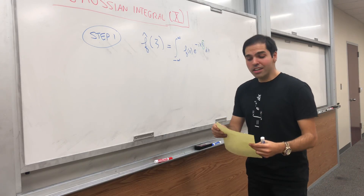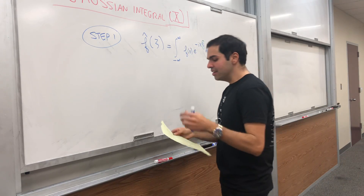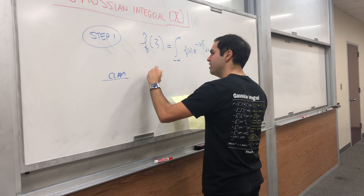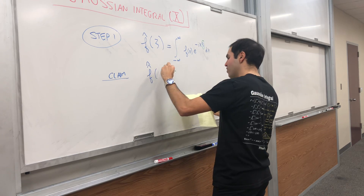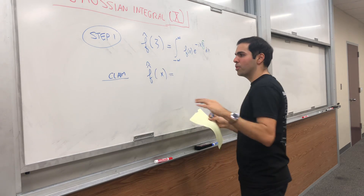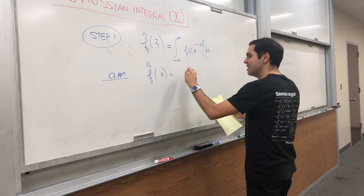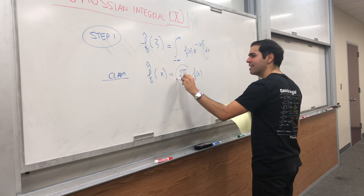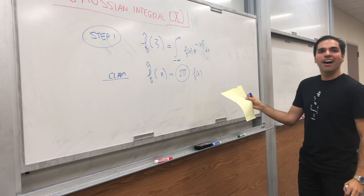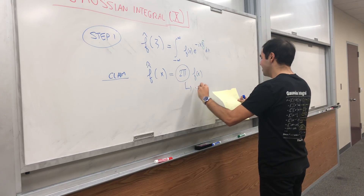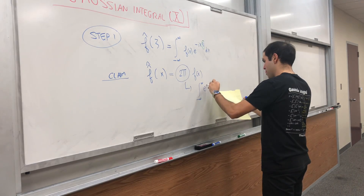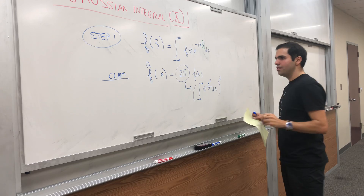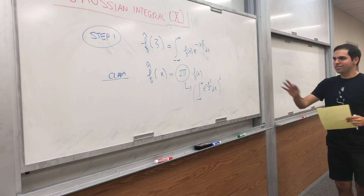What I'm going to show today is the following fact. The claim is: if you take the Fourier transform twice, it naturally becomes a function of x — it's just equal to 2π f(x). And I'm claiming that this constant 2π is not random; it's precisely the Gaussian integral, in the form of the integral of e^(−x²/2) dx. So that's what we want to show.